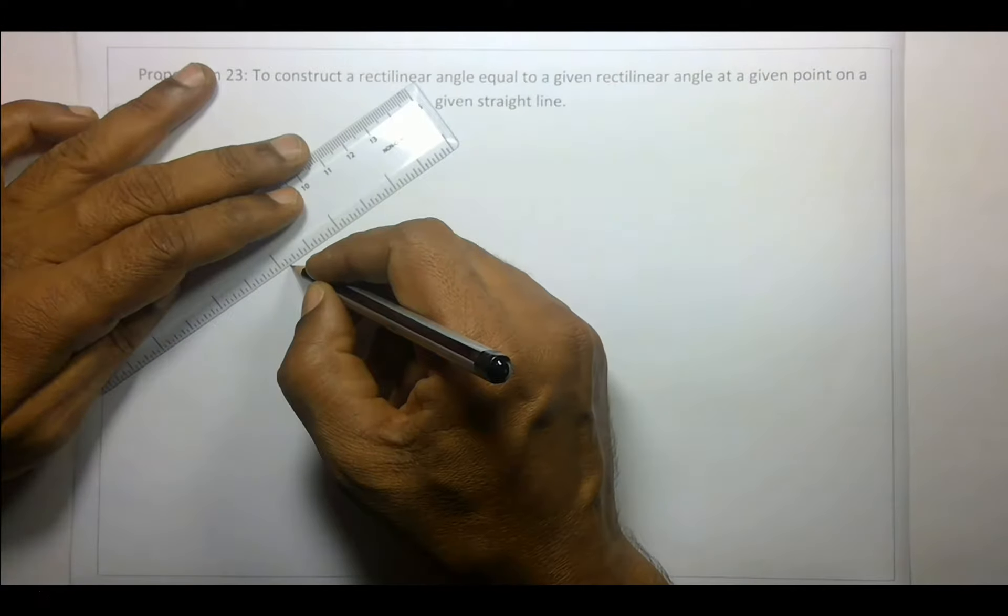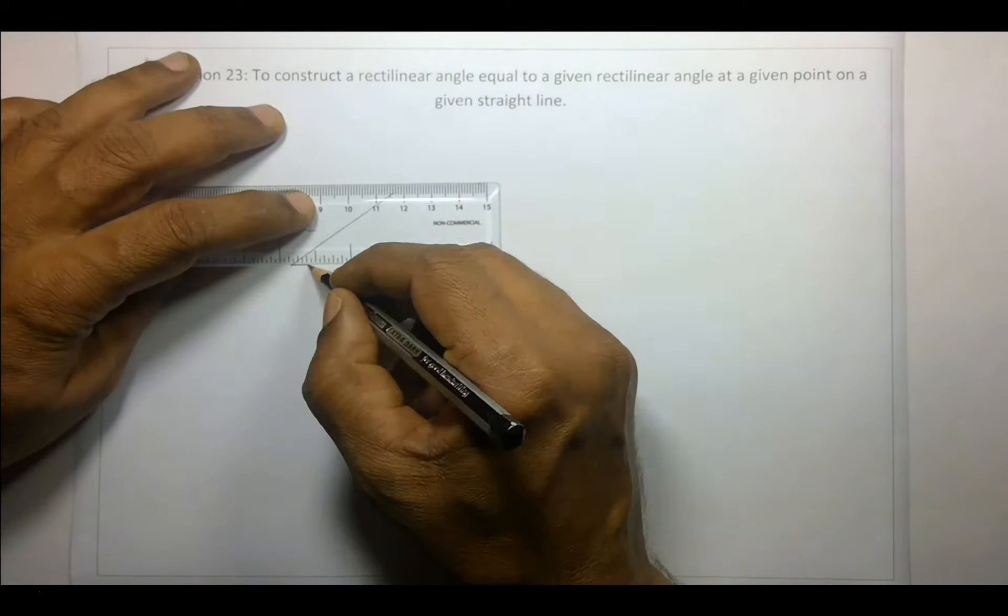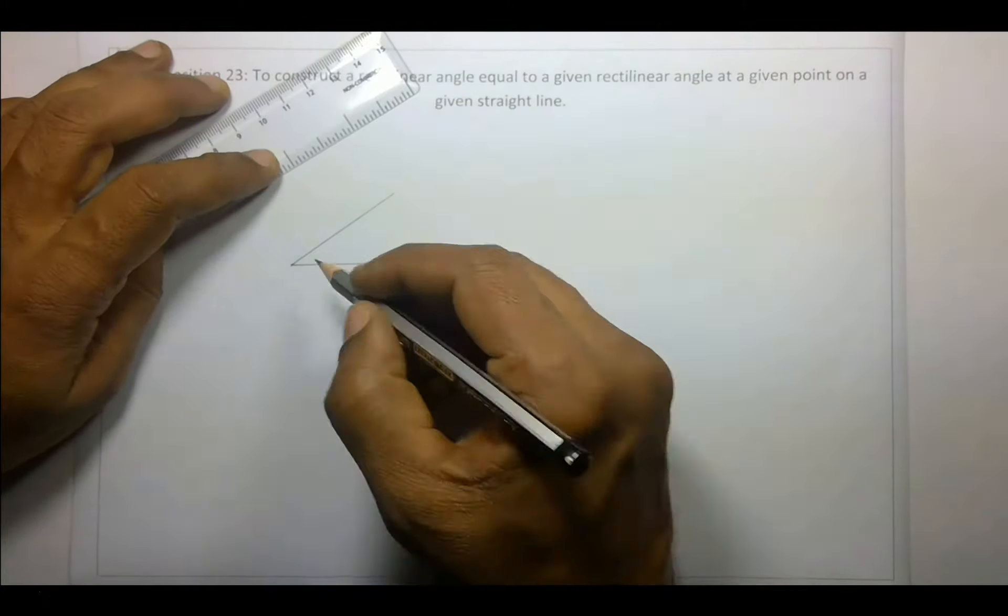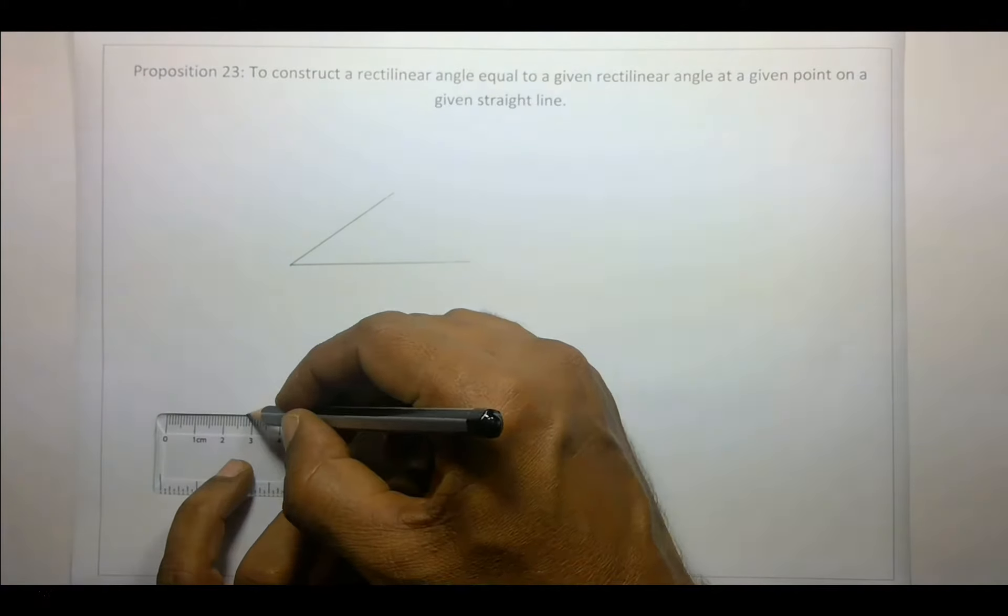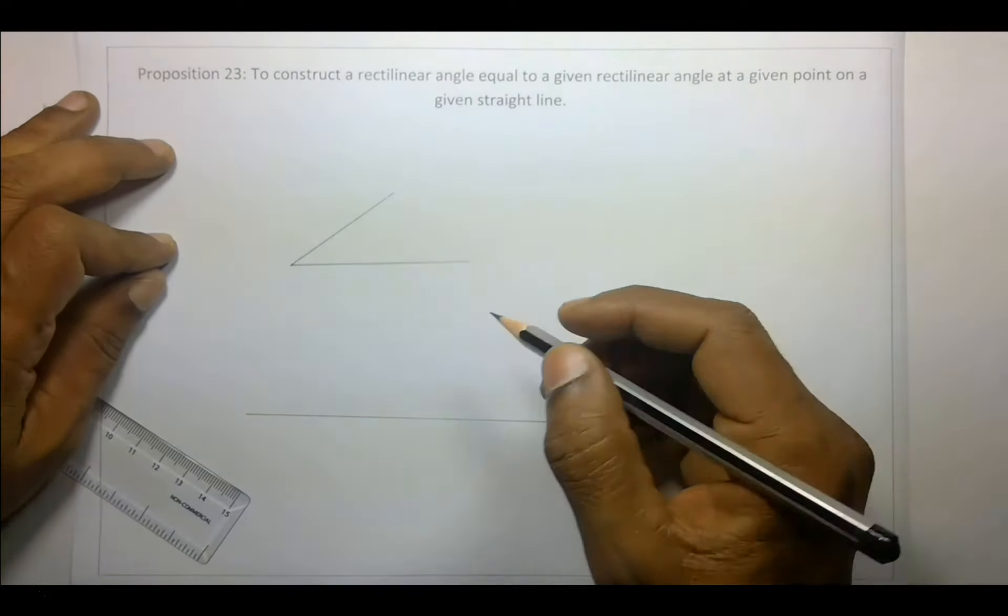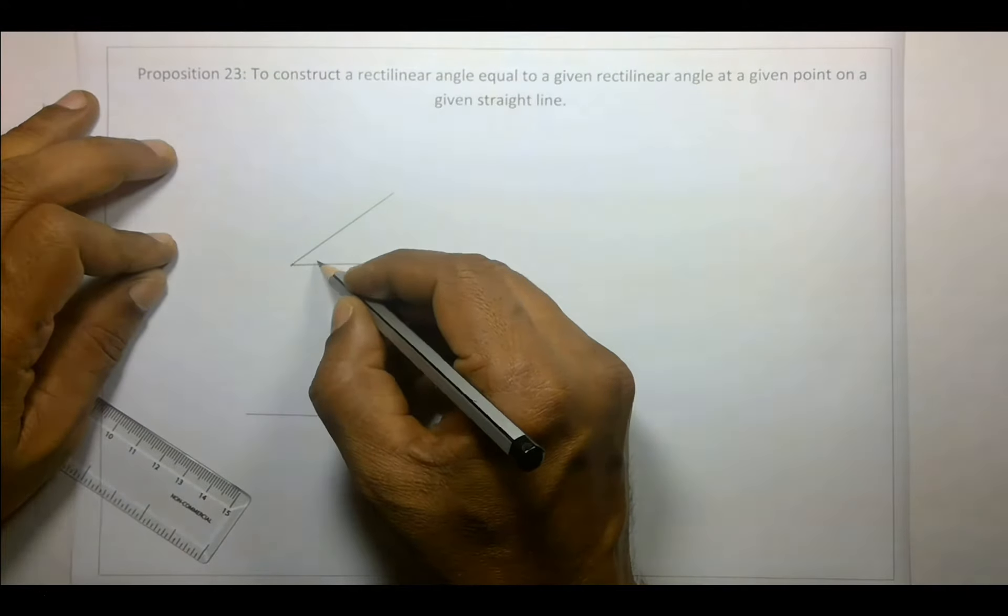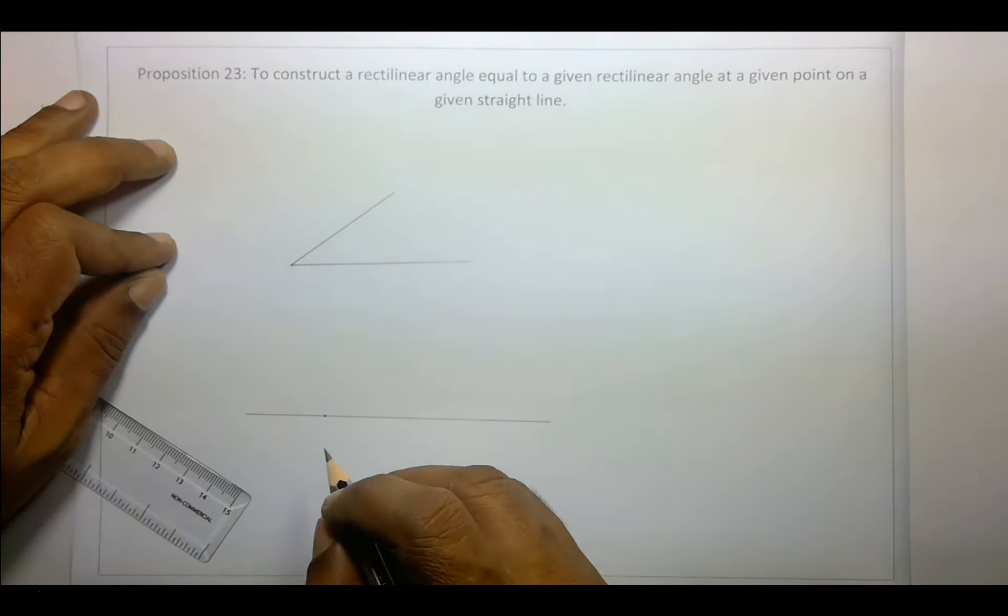Basically, what this means is that an angle is already there, right? An angle is there and a line has been given, a straight line has been given. What we have to do is create this angle on this line at say this point, at a given point.